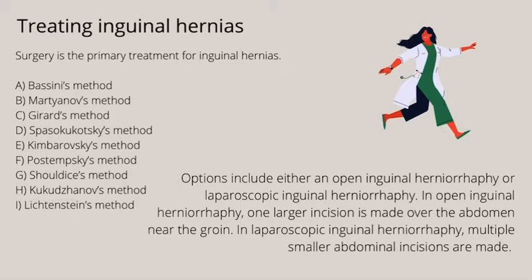To fix the problem, muscle and connective tissue may be sewn together to make a traditional repair. There are a few methods of traditional repair. In the modern approach, options include open inguinal hernia repair or laparoscopic inguinal hernia repair. In open inguinal hernia repair, one larger incision is made over the abdomen in the groin. In laparoscopic inguinal hernia repair, multiple smaller abdominal incisions are made.